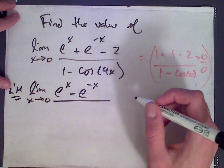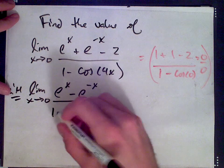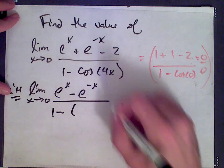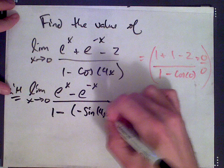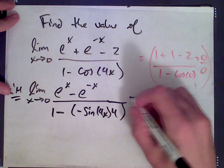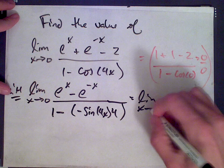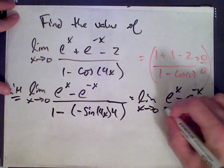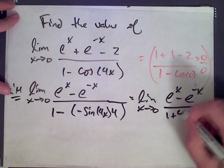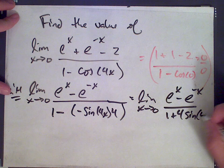Divided by derivative of cos 4x, which is minus sine 4x times 4. So we get the limit as x goes to 0 of e to the x minus e to the negative x over negative 4 sine 4x.